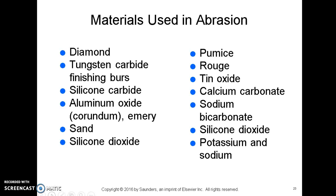Certain materials are also used in abrasion: diamonds, tungsten carbide finishing burs, silicon carbide, aluminum oxide (similar to emery or sandpaper), sand itself and silicon dioxide, pumice, rouge, tin oxide, calcium carbonate, sodium bicarbonate, and potassium and sodium. Calcium carbonate is chalk, and sodium bicarbonate is baking soda.